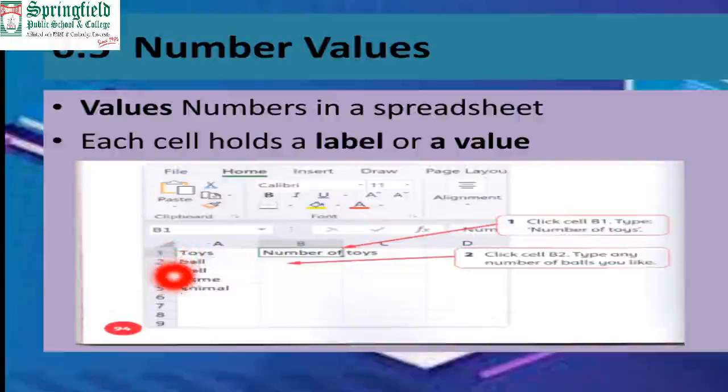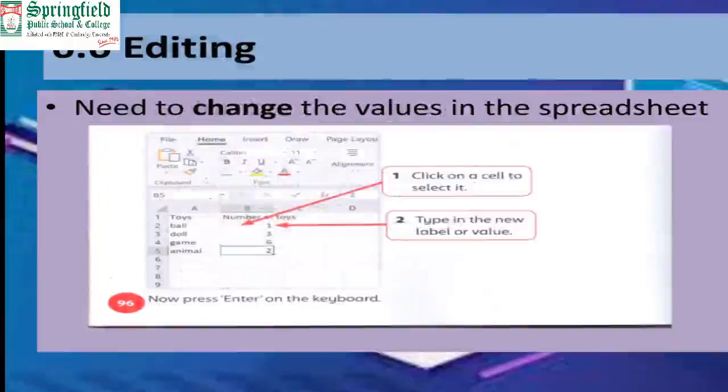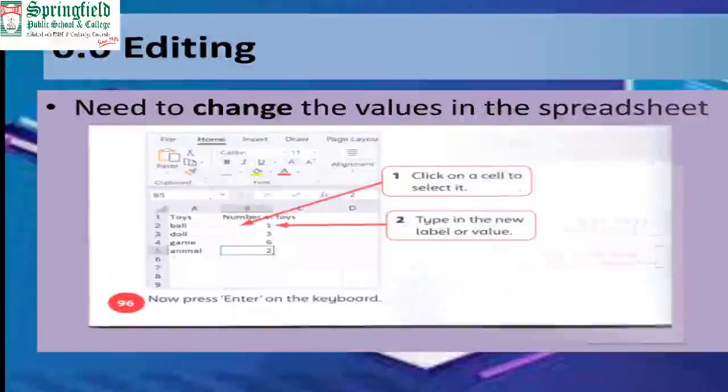Toy, ball, doll - this is called the label. And here I will enter the numbers one, two, three, four, five. How will I add? Click the cell in which I want to add the numbers.